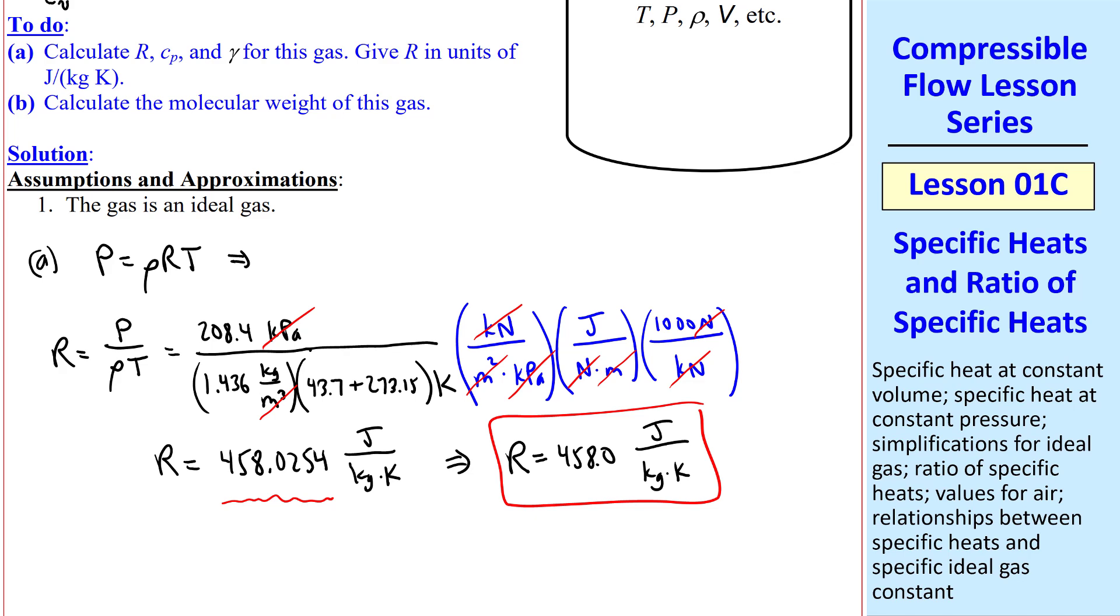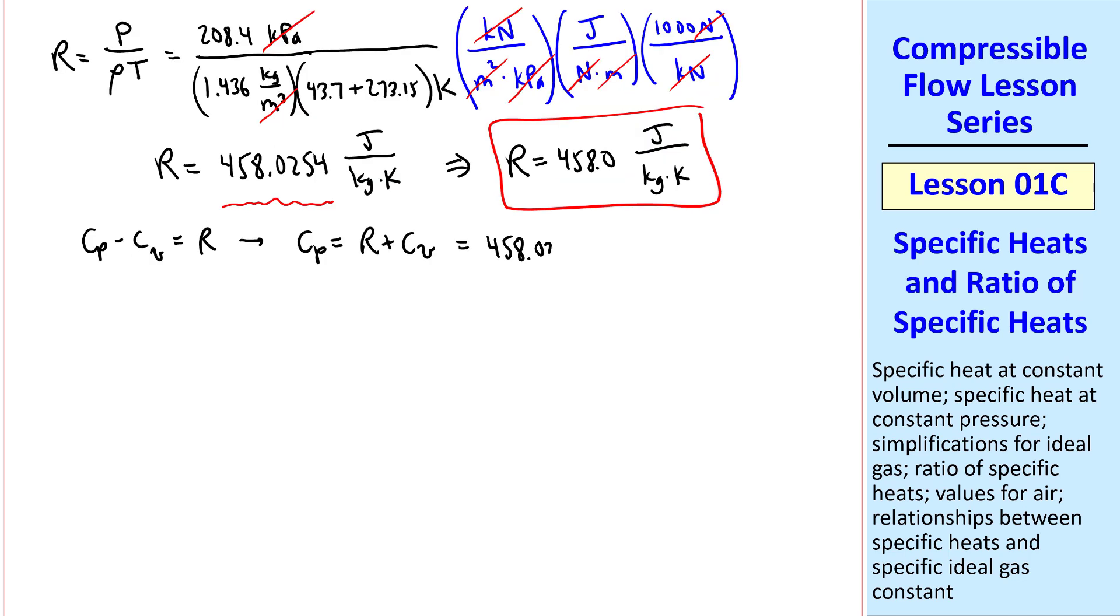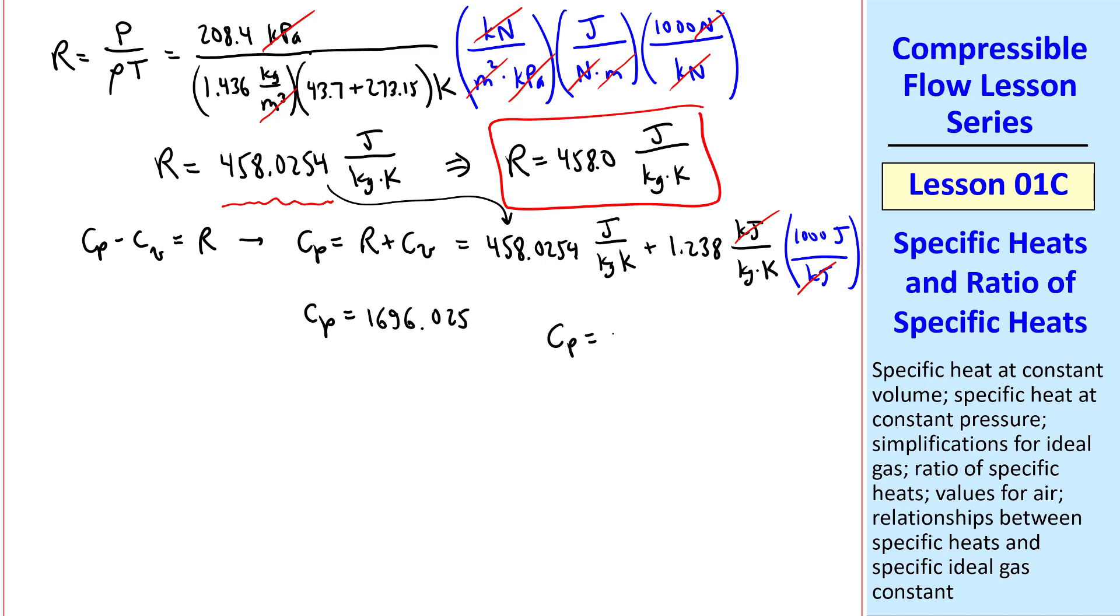Now let's calculate Cp and gamma. Cp minus Cv is R. Therefore we can solve for Cp as R plus Cv. And Cv was given in this problem. So here I'll use my R with several additional digits to avoid round off error, and then the measured value of Cv. And one unity conversion factor is necessary, a thousand joules per kilojoule, so that these two units are consistent. This gives us Cp as 1696.025. But again, I give my answer to four significant digits, which I indicate by this period. And the units are joule per kilogram K. And I should have put my units here also for consistency. But this is the answer that I would report.